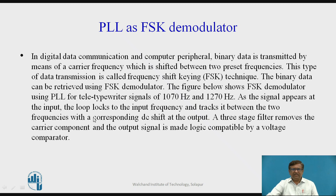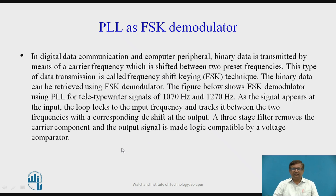As the signal appears at the input, the loop locks to the input frequency and tracks it between the two frequencies with a corresponding DC shift at the output. The output of the phase detector changes depending upon the change in the input frequency. A three-stage filter removes the carrier component, and the output signal is made logic compatible by using an external voltage comparator using an op-amp IC.